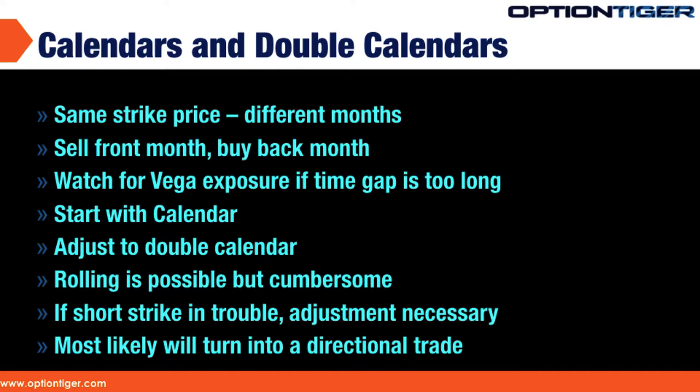This is also a non-directional strategy. Looking at the basic calendar, it starts off non-directional, so you're going to start off with a delta neutral or very close to delta neutral position. But depending on how the stock moves, your position is going to get a positive delta or a negative delta. It's a theta positive trade and it's also a vega positive trade.